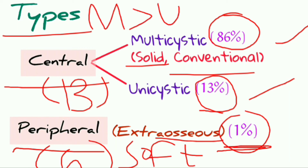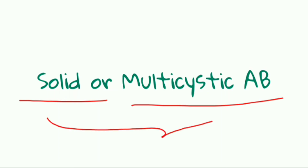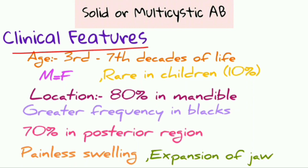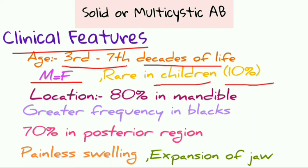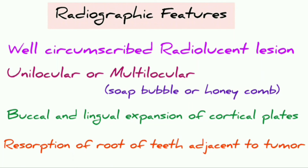Now let us look at the solid or multicystic ameloblastoma in detail. The age involved is the third to seventh decade of life. Males and females are equally involved with no sex predilection. In rare cases it occurs in children, around 10% of cases. 80% of cases involve the mandible, with greater frequency in Blacks, and 70% involve the posterior region. It is usually a painless tumor with expansion of the jaws.